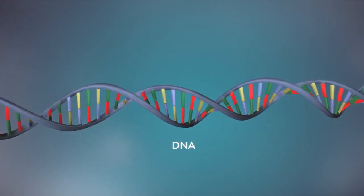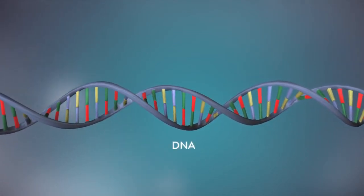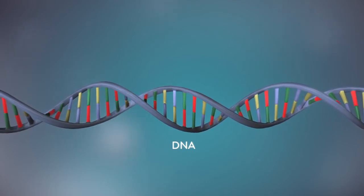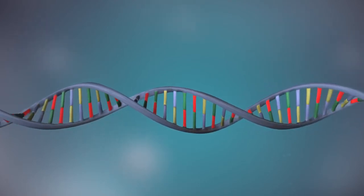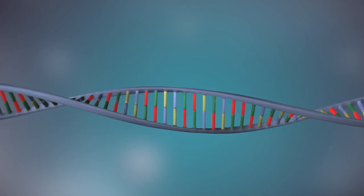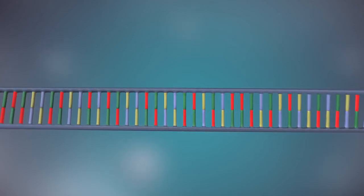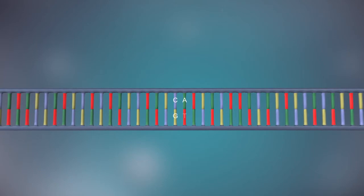DNA is a molecule made up of two strands twisted around each other in a double helix shape. Each strand is made up of a sequence of four chemical bases represented by the letters A, C, G, and T.